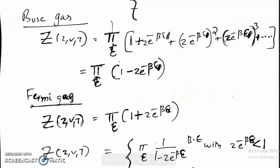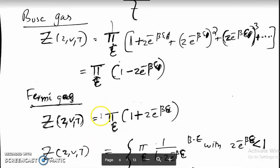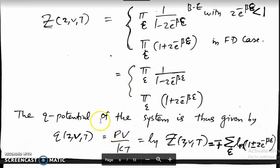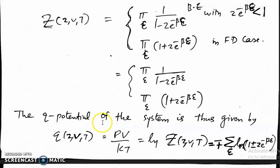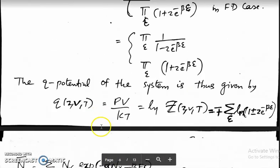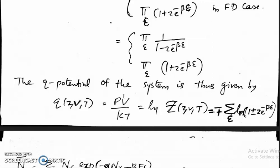Hi, welcome back. We were discussing the Q potential of a system, which is PV/KT. The Q potential is a quantity that we defined in the grand canonical ensemble.